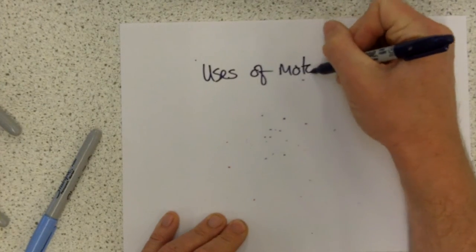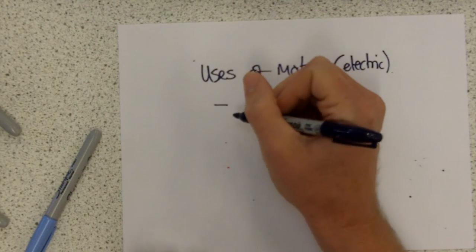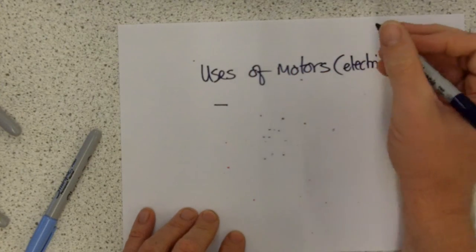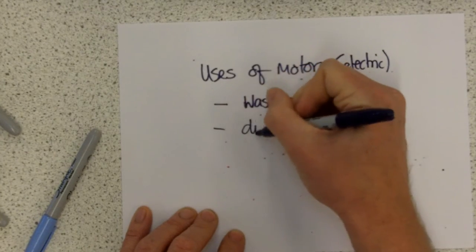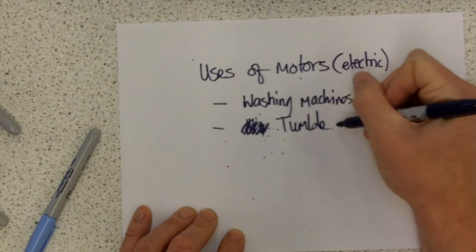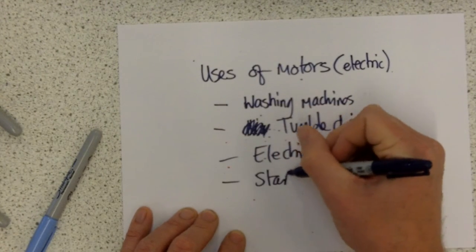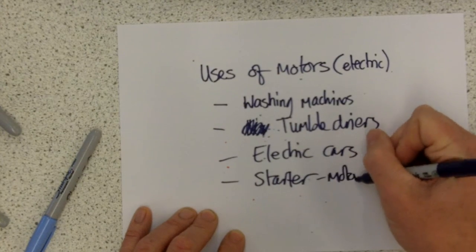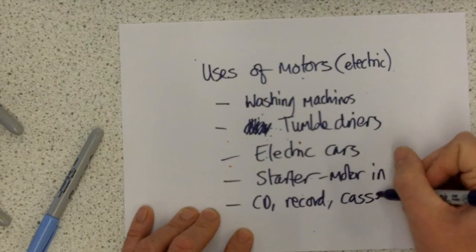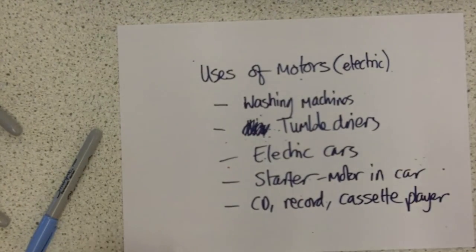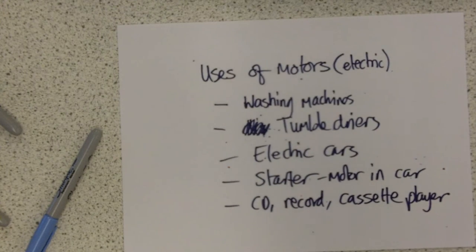Last thing on motors is uses of motors. And it's often surprising that pupils get tricked by this. It's a very simple question. Any use of an electric motor is acceptable to the question. So washing machines, dishwashers, oh actually I don't think dishwashers do, so tumble dryers, electric cars, or the starter motor in a conventional petrol or diesel car. CD player, record player, cassette player, if you still even know what one of those is. Anything that spins that's powered by electricity has got an electric motor in it somewhere. Electric drills, electric screwdrivers, etc. So commit a few of those to memory.